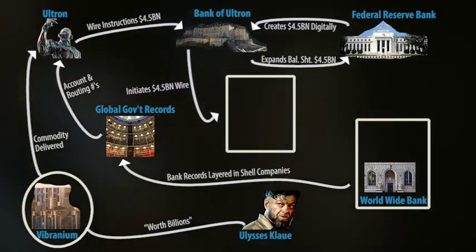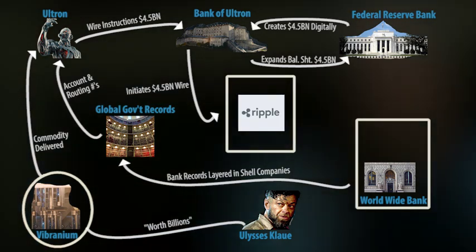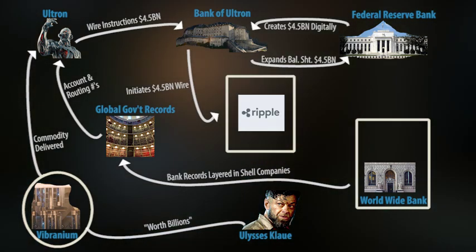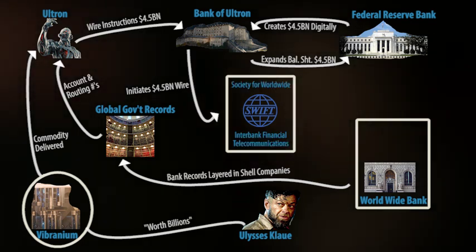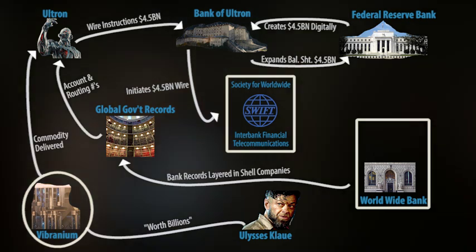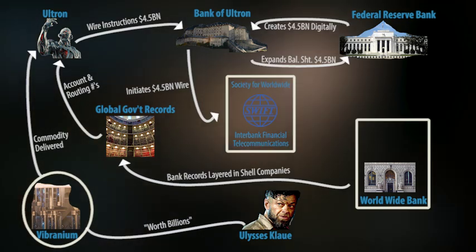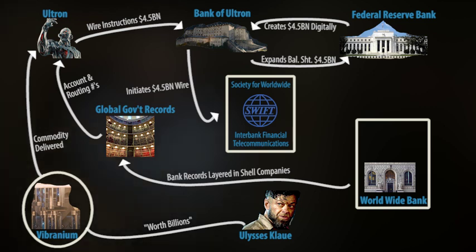Wiring the money means sending it through an interconnected digital system that connects international bank accounts. There are several such systems, including Fedwire, CHIPS, and Ripple. However, I believe Ultron would have used the SWIFT system. SWIFT stands for the Society for Worldwide Interbank Financial Telecommunications and is a sprawling messaging network used by investment banks, trading firms, and 10,000 other such financial institutions to expeditiously, accurately, and securely send and receive information such as transfer instructions.